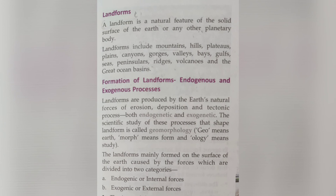A landform is a natural feature of the solid surface of the Earth or any other planetary body. The landform is the main natural feature of a solid surface like land or a planetary body. Landforms include mountains, hills, plateaus, plains, canyons, gorges, valleys, bays, gulfs, seas, peninsulas, ridges, volcanoes, and the great ocean basins.